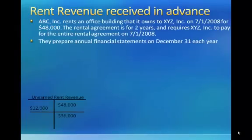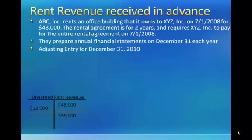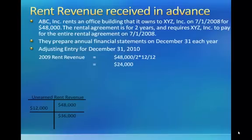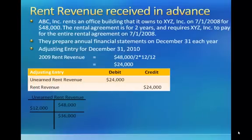Continuing with this example through 2009, the entire year's worth of rent would have been earned — from the beginning of 2009 to the end of 2009. So in this case, the adjusting entry at the end of 2009 would be for the full $24,000 annual rental revenue. You take the $48,000 total amount, divide by 2 since it's a two-year rental agreement, and multiply by 12 over 12, or just one year, and you end up with $24,000. The adjusting entry would be a debit to unearned rent revenue for $24,000 and a credit to rent revenue for $24,000.